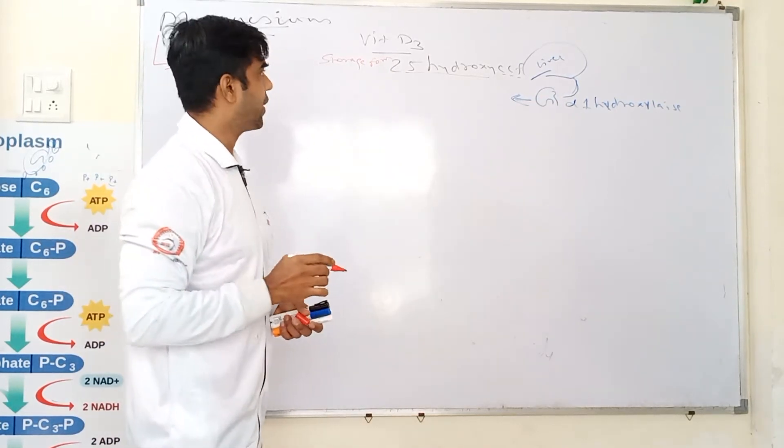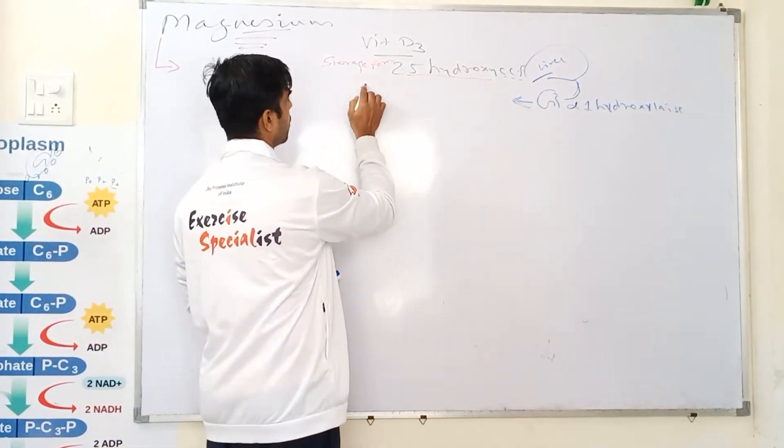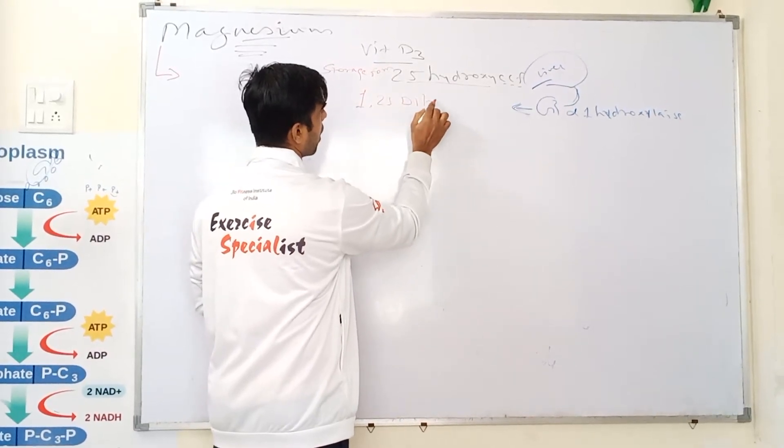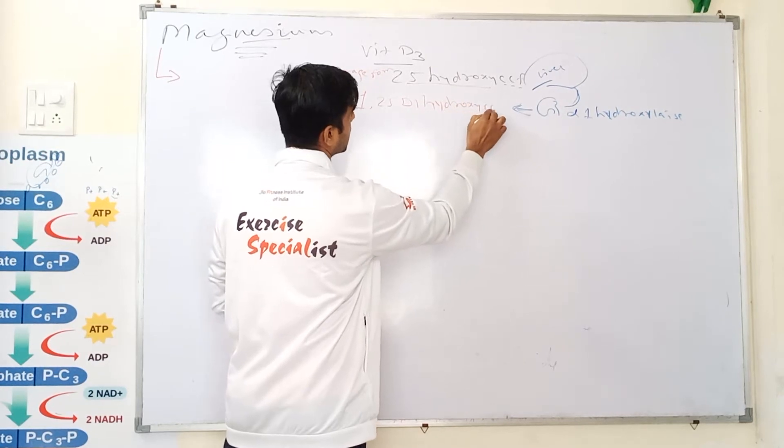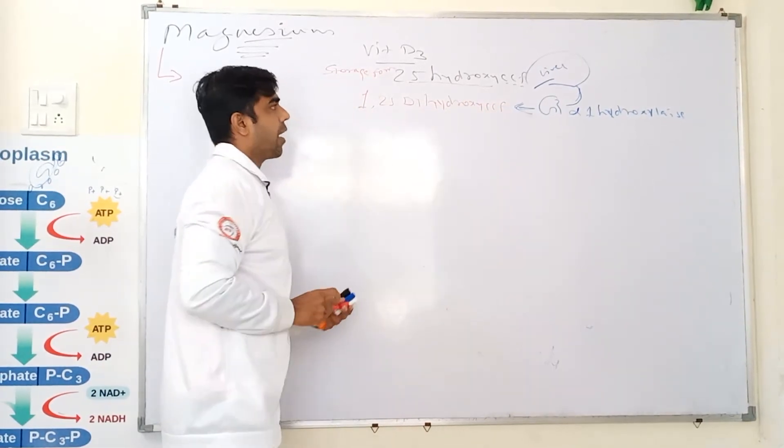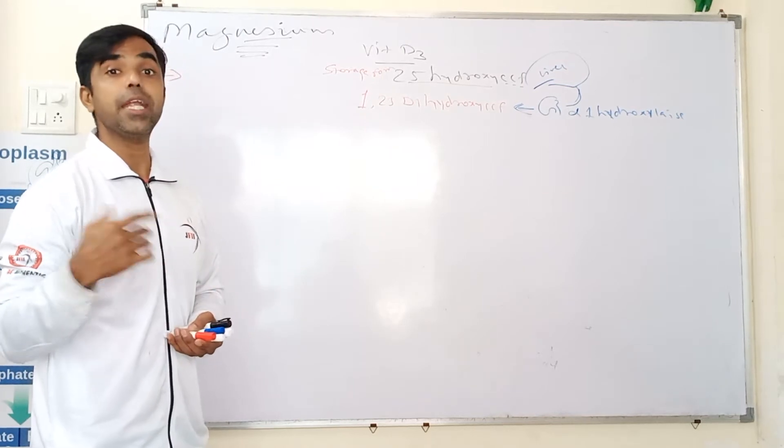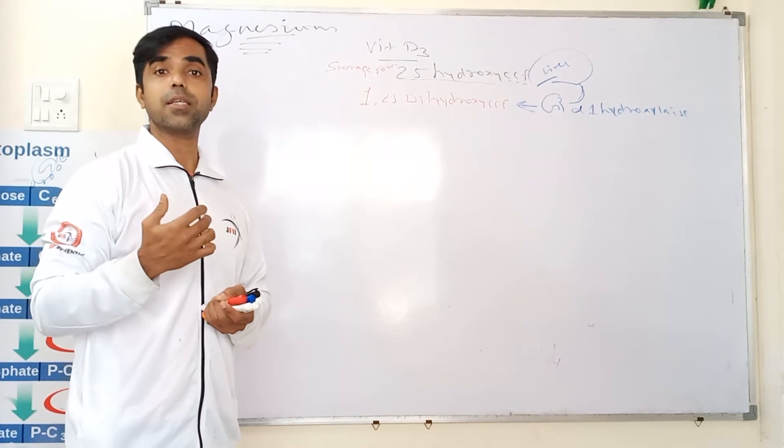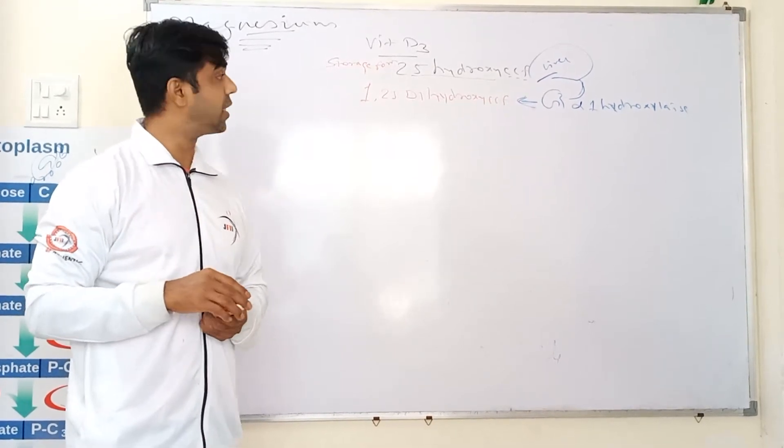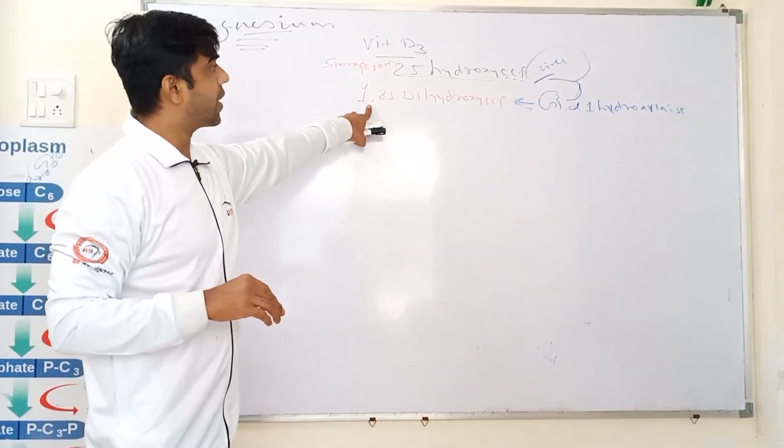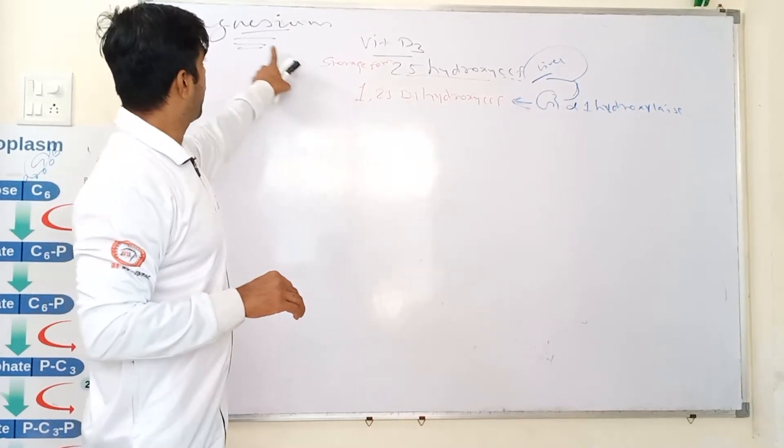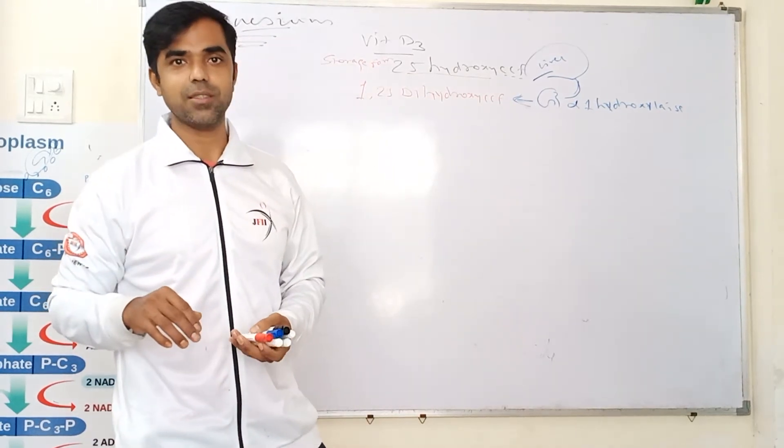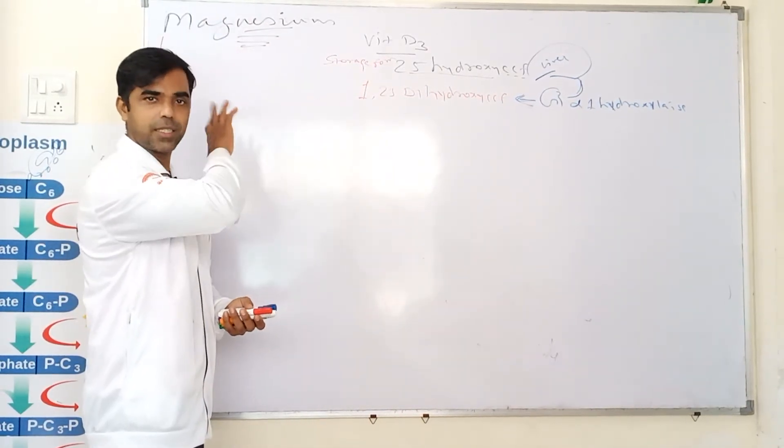Vitamin D3 is activated. 1,25-dihydroxy cholecalciferol. This is the active form of vitamin D3. This is ready to mobilize the calcium as well as to remineralize and demineralize the calcium. Right. So to activate this, we need magnesium to complete the enzymatic reaction. Right. So you understood now how it does.